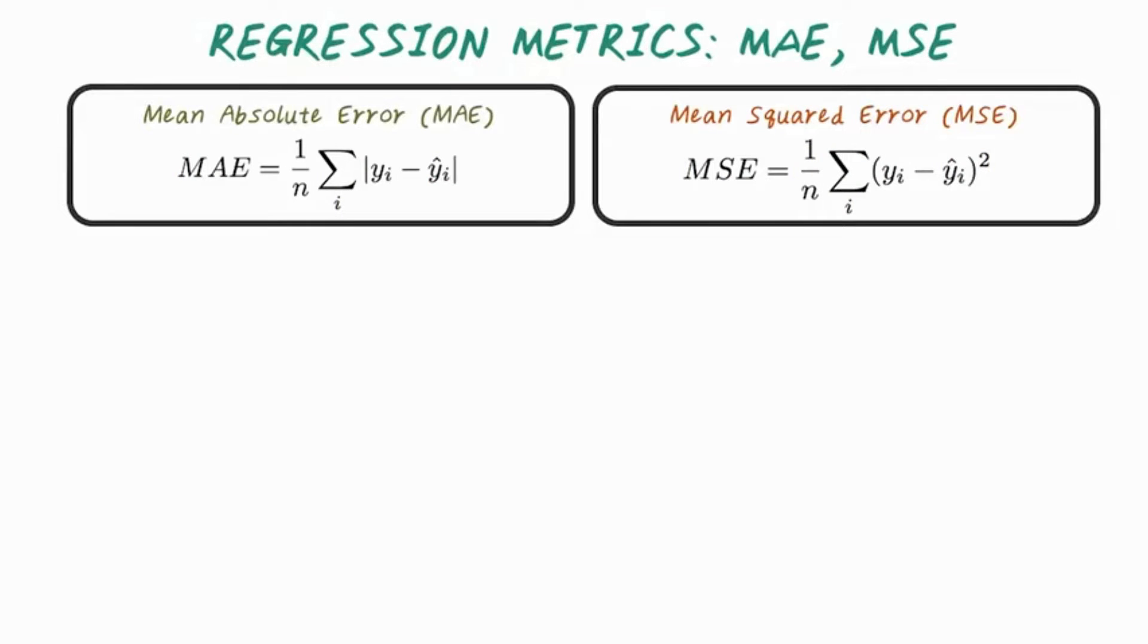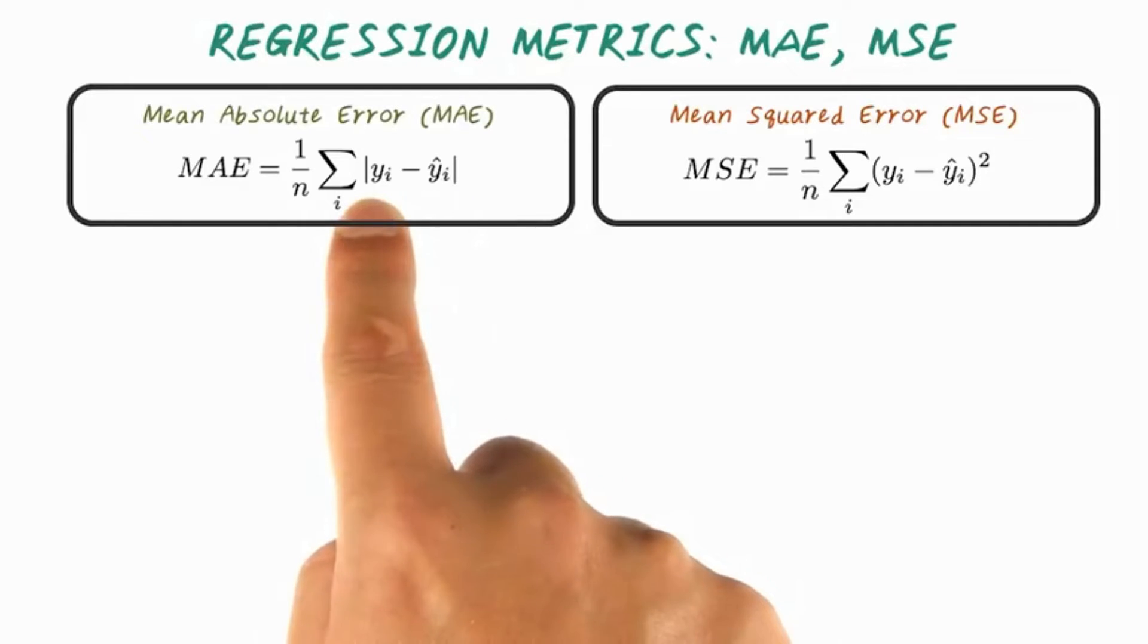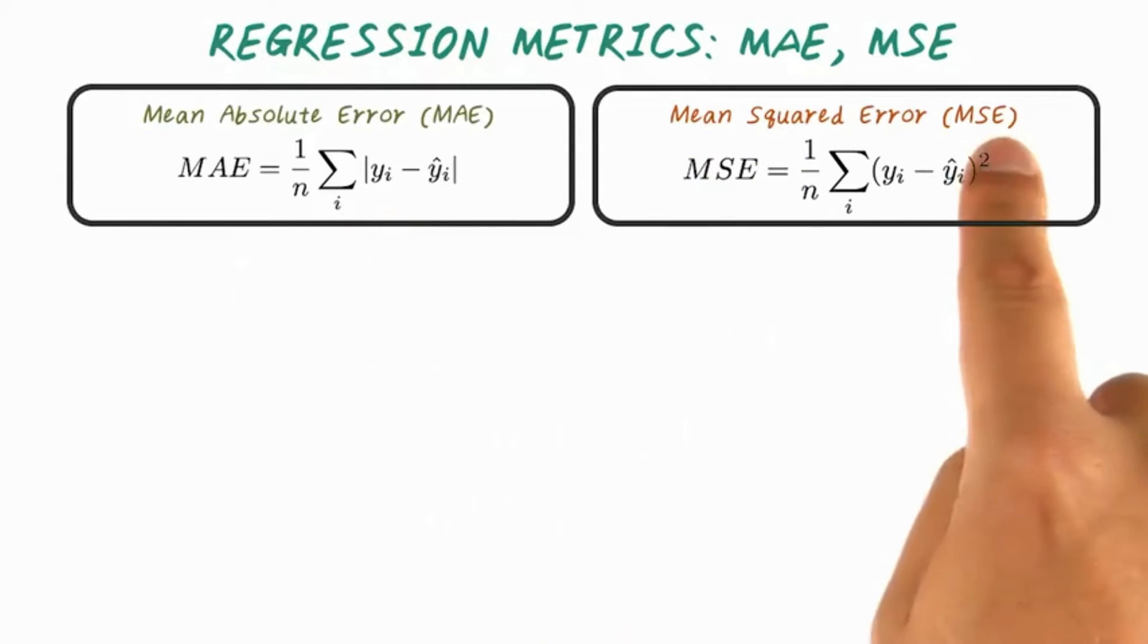The mean absolute error, MAE, measures the average of the absolute errors, that is the difference between the prediction and the ground truth value.